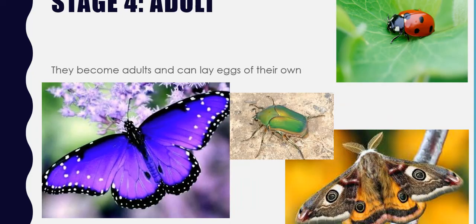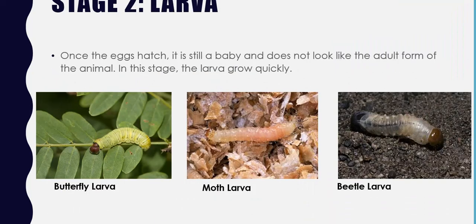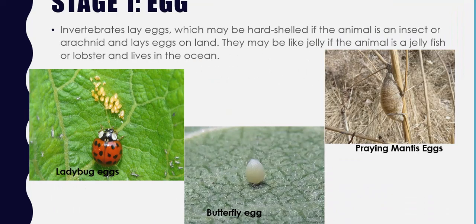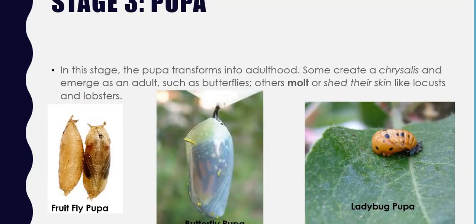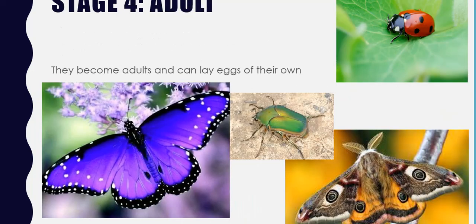The last stage is stage four, which is when they become adults and can lay eggs on their own. We have a beautiful butterfly, a moth with cool eye designs on it, a cute little ladybug, and a beetle as well. So those are the four stages — remember it goes egg, to larva, to pupa, to adult.